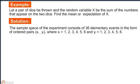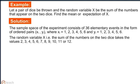Solution: The sample space of the experiment consists of 36 elementary events in the form of ordered pairs (xi, yi), where xi equals 1, 2, 3, 4, 5, and 6. Similarly, yi also takes values from 1 to 6. The random variable x, that is the sum of the numbers on the two dice, takes values 2, 3, 4, 5, 6 up to 12.